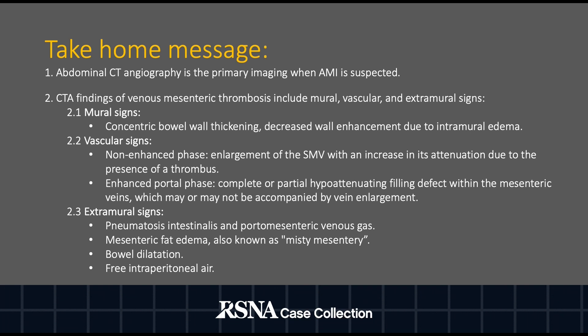Mural signs include concentric bowel wall thickening and decreased wall enhancement due to intramural edema. Vascular signs on the non-enhanced phase include enlargement of the SMV with increased attenuation due to the presence of a thrombus. On the enhanced portal phase, a complete or partial hyperattenuating filling defect within the mesenteric veins may or may not be accompanied by vein enlargement. Extramural signs include pneumatosis intestinalis, portal-mesenteric venous gas, mesenteric fat edema (the misty mesentery sign), bowel dilatation, and free intraperitoneal air.